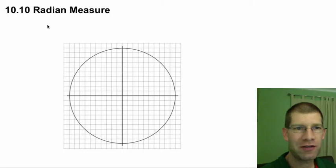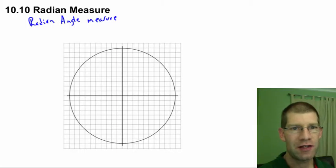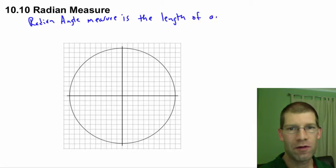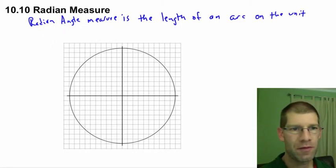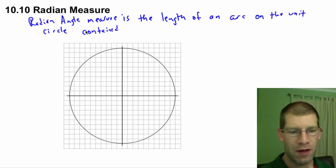First thing I want to say is, what is this radian measure? So radian angle measure is the length of an arc on the unit circle contained by an angle.